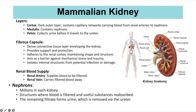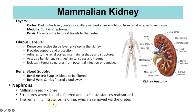The renal artery supplies the kidney with blood to be filtered and the renal vein carries the filtered blood away. The nephrons are within the medulla — you actually have millions in each kidney — and these are the structures where blood is filtered and useful substances are reabsorbed back into the blood through capillaries. Whatever isn't reabsorbed forms the filtrate, which goes on to form the urine.